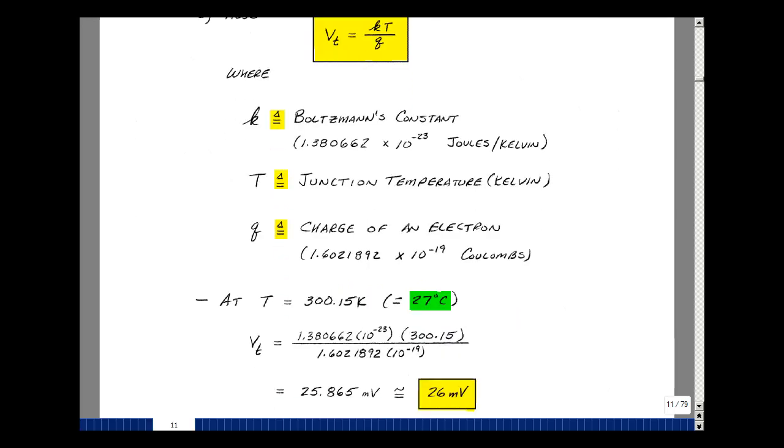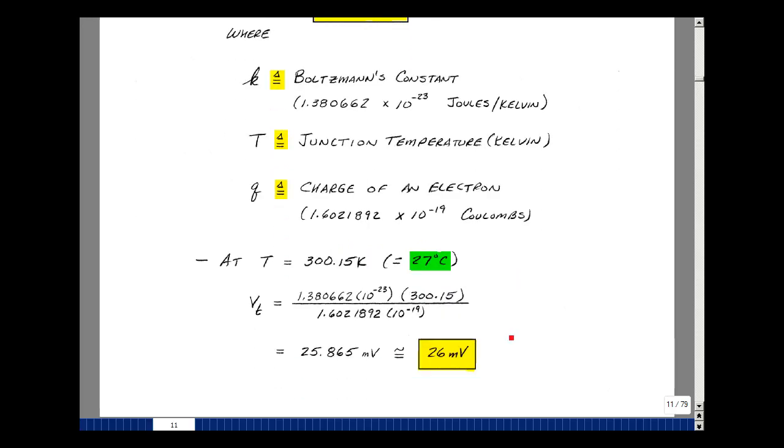If you were to put them in that equation for V_t at 27 degrees C, which is 300.15 degrees kelvin, we have kT divided by q, you get 25.865 millivolts. Now people approximate this as roughly 26 millivolts, and we'll do that in hand calculations. When we do comparisons with the SPICE program, I'm going to use this value so we can see how our hand calculations match up with the simulation results.